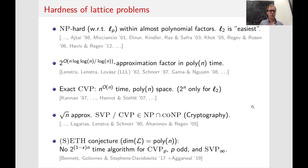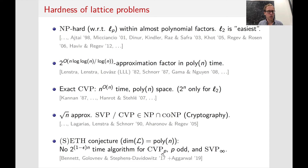Recently there has been a lot of exciting work showing quantitative hardness results. Assuming the strong ETH conjecture, it was shown that there cannot be any algorithm for CVP for all LP norms and SVP with respect to L-infinity that is faster than 2^n. This result does not apply for L2. For CVP in general and SVP, it was also shown that there cannot be any sub-exponential time algorithms, assuming strong ETH. However, the constant exponent is much less understood.